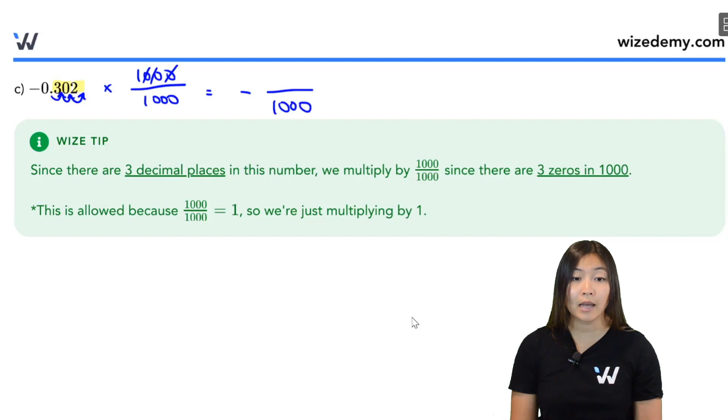So in the numerator, I end up with 0, 3, 0, 2. Obviously, that zero in the front, we normally don't write, so it's just 302. And from here, you can simplify this by dividing top and bottom, let's say, by 2.